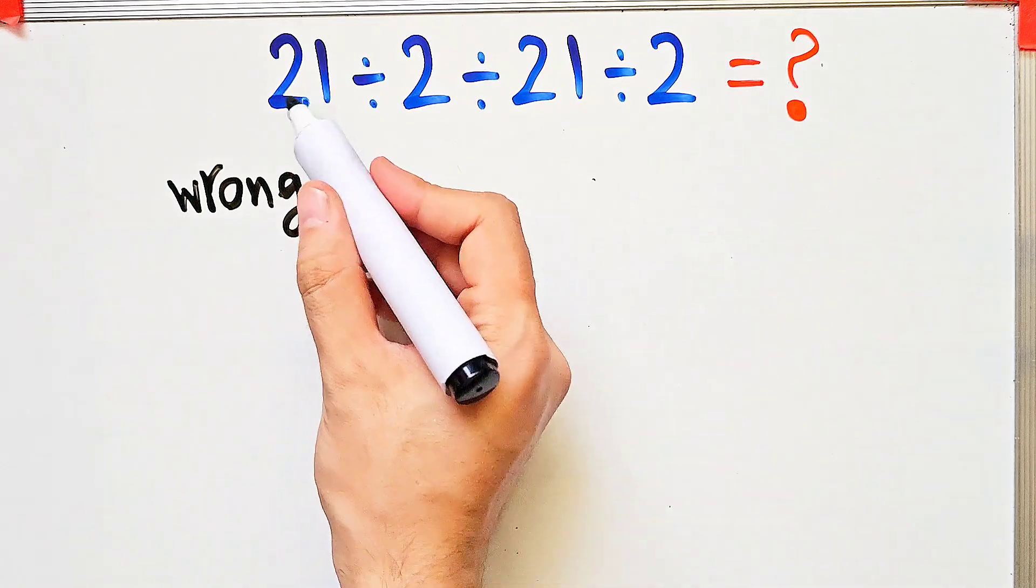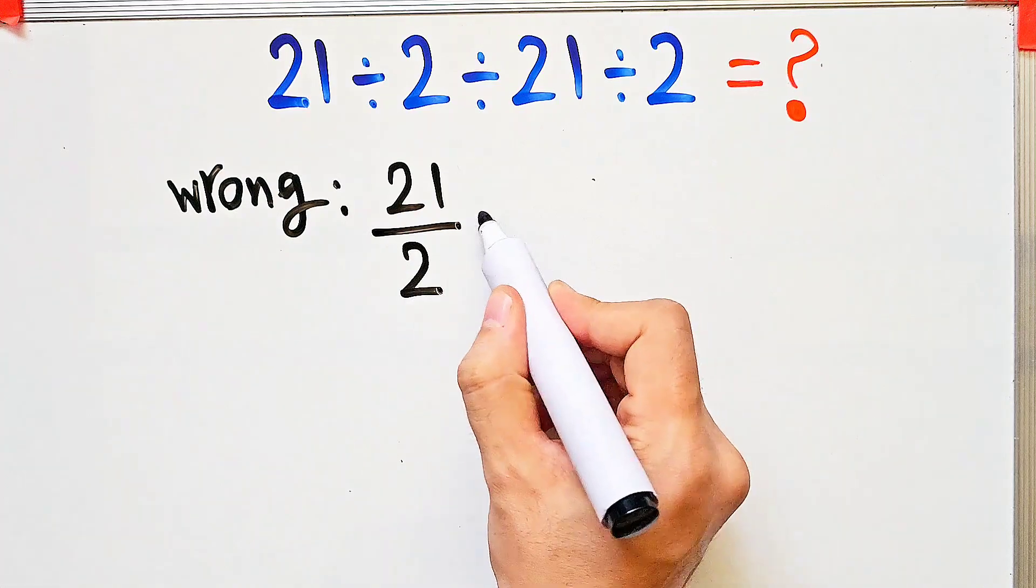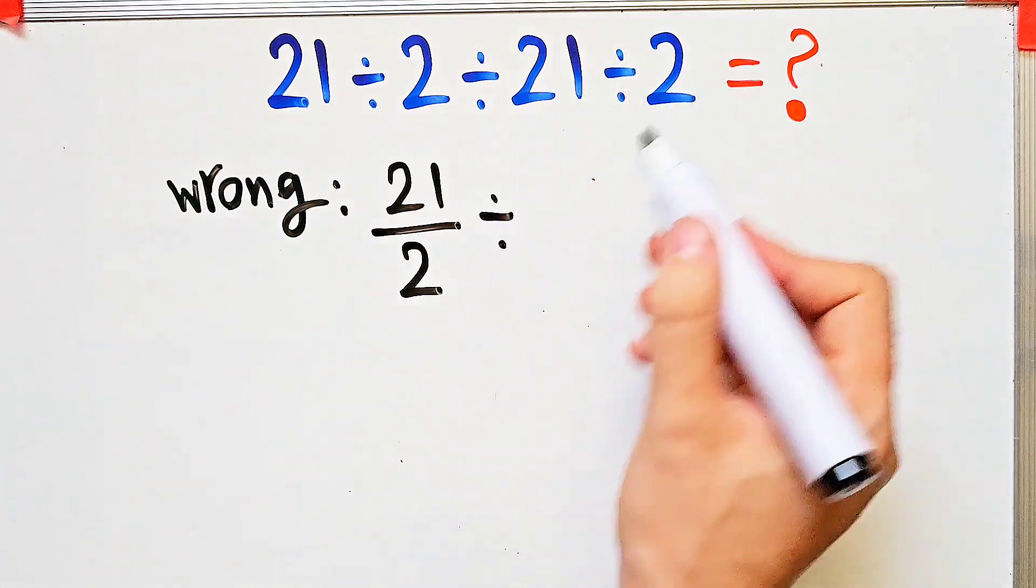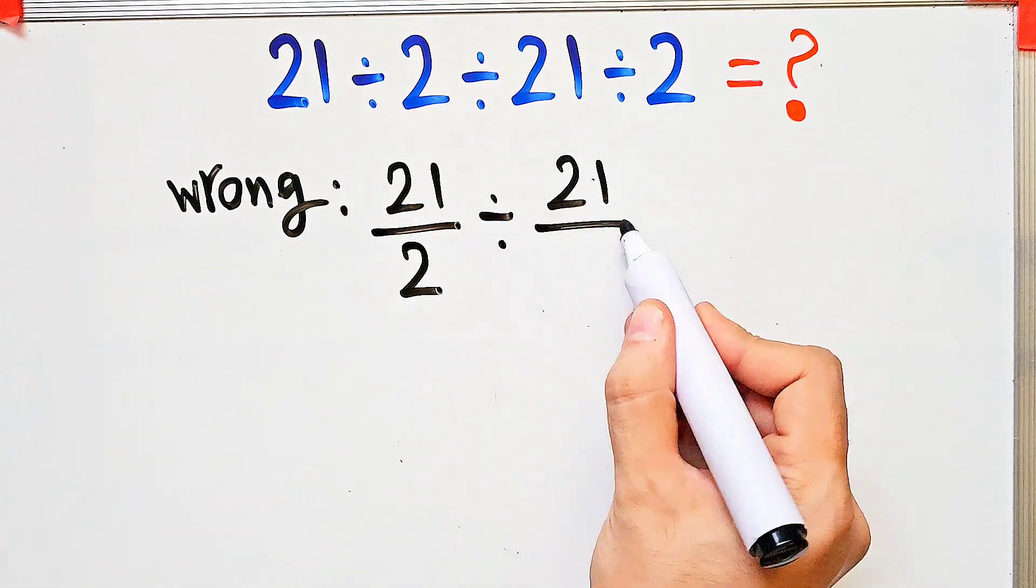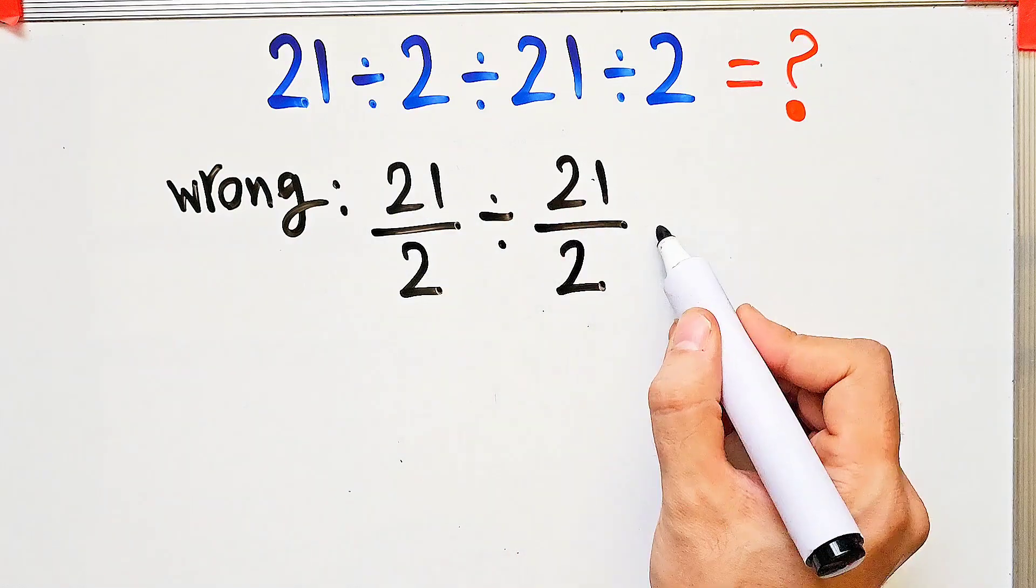21 divided by 2 equals 21 over 2. 21 over 2 divided by 21 over 2, and they say the final answer of this question equals 1. This answer is definitely wrong.